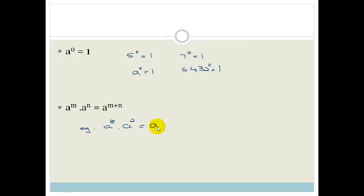if I had to rewrite this, do you agree that a cubed would be a times a times a? And a squared would be a times a? And then it becomes 1, 2, 3, 4, 5, a to the power of 5.